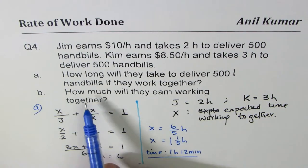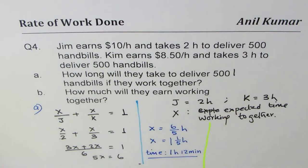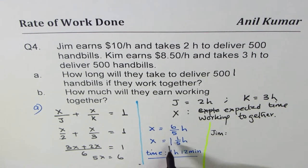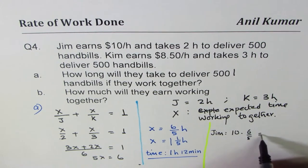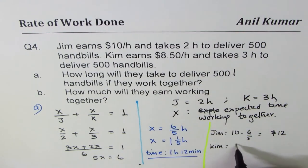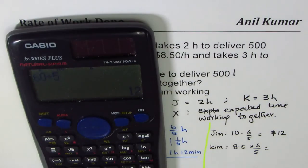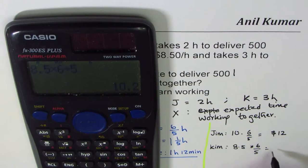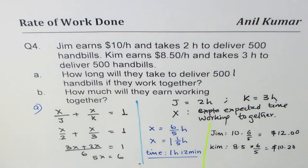Part B is how much will they earn working together? So they will earn based on their rate, which is for Jim, the time is six over five times 10. So you do 10 times six over five, that is $12. As far as Kim is concerned, his rate is 8.5, so 8.5 times six over five. Let's use calculator. 8.5 times six divided by five equals $10.20. So that is their earning when they work together.